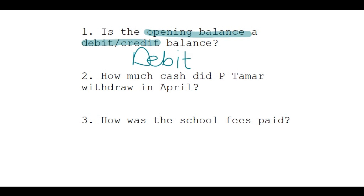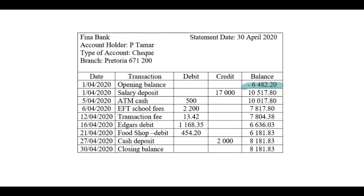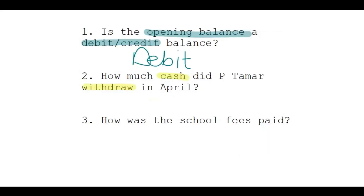How much cash did Peter Ma withdraw in April? Looking at where it says ATM, it was 500 Rand.